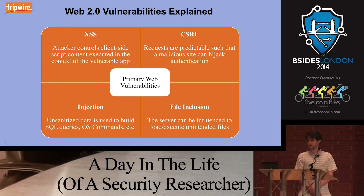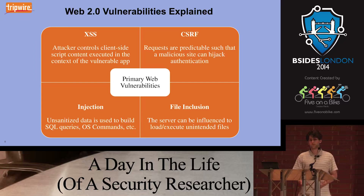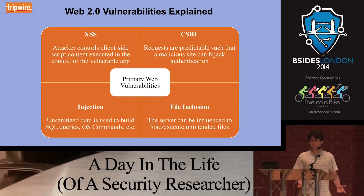CSRF — cross-site request forgery — is when a web application has requests which are ultimately predictable. You're able to craft up a web page and make it so that your web page sends out messages to another web application. That web application isn't going to be able to distinguish this request from a legitimate user because of how the browser works. Injection is a category that covers a lot of different things: OS command injection, XML injection, SQL injection, LDAP injection. Finally, file inclusion vulnerabilities are where you as an attacker can influence what code is actually going to be loaded on the server side.